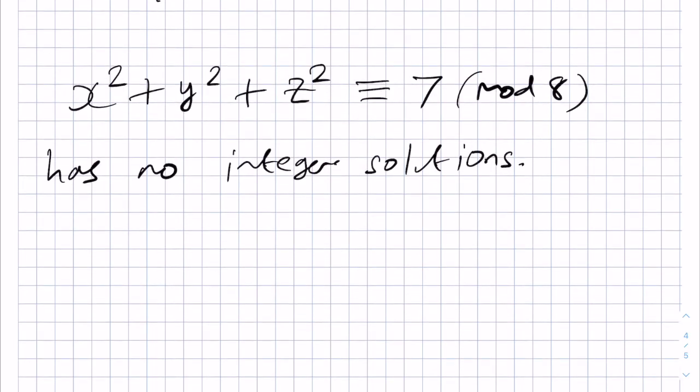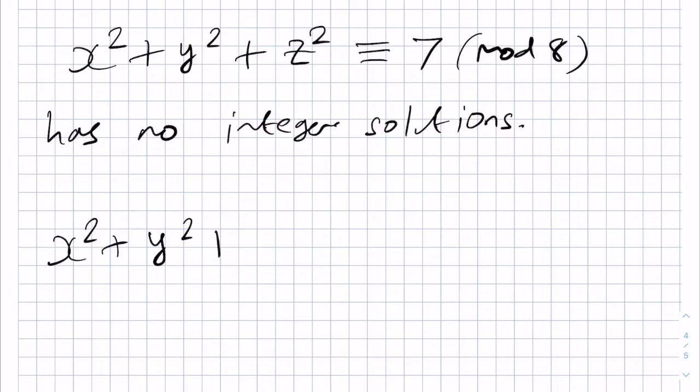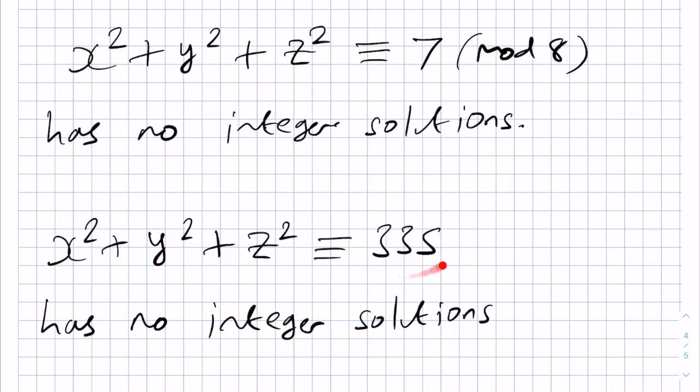Therefore, our original equation, which is x squared plus y squared plus z squared equals 335, has no integer solutions either. And in fact, we can see that as long as the number here is congruent to 7 modulo 8, then those equations will not have integer solutions either. The takeaway message is that modulo 8 was quite useful to consider because the squares could only take one of three values, 0, 1, and 4, in modulo 8, which made checking the cases quite simple, even though there were quite a few of them.